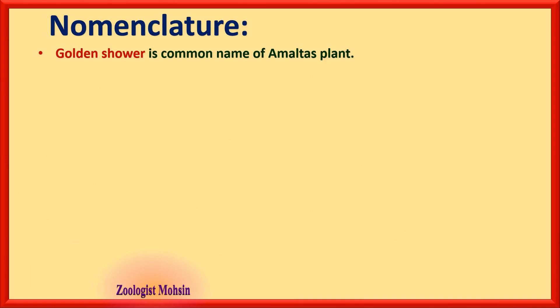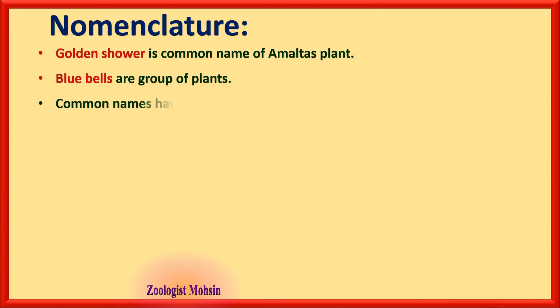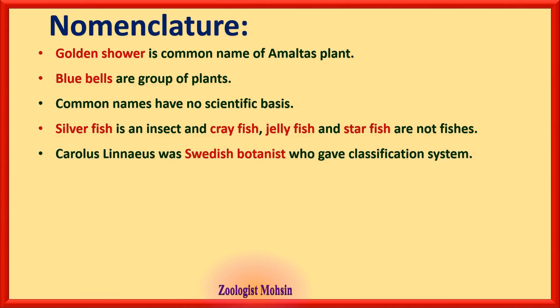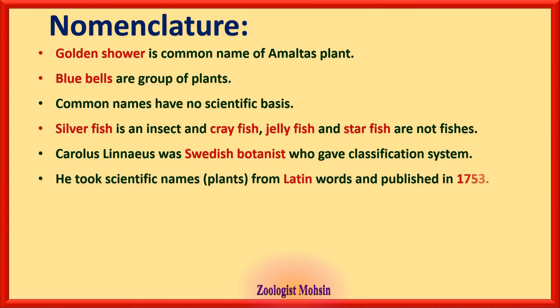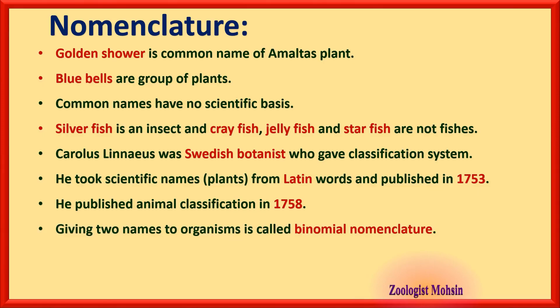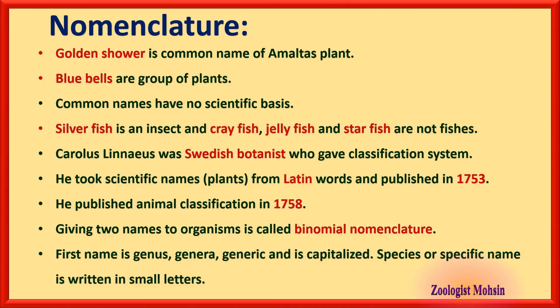Regarding nomenclature: golden shower is the common name of the Amaltas plant. Bluebells are a group of plants. Common names have no scientific basis — silverfish is an insect, while crayfish, jellyfish, and starfish are not fishes. Carolus Linnaeus was a Swedish botanist who gave the classification system. He took scientific names for plants from Latin and published plant classification in 1753, then animal classification five years later in 1758. Giving two names to organisms is called binomial nomenclature: the first name is the genus and is capitalized, and the second is the species name written in small letters.